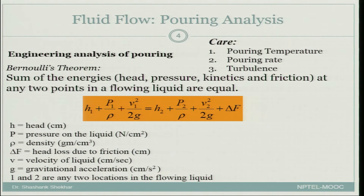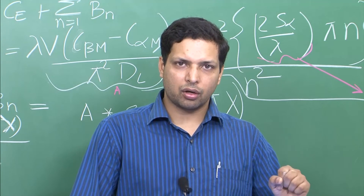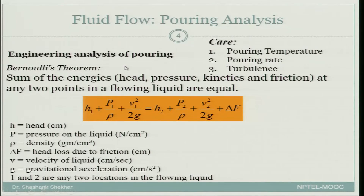When talking about fluid flow, another important analysis is pouring. Key considerations include pouring temperature, pouring rate, how to determine the pouring rate, and ensuring the flow is not turbulent — since turbulent flow can break the mold. For this we use Bernoulli's theorem: the sum of energy heads — pressure, kinetic, and friction — at any two points in a flowing liquid must be equal.